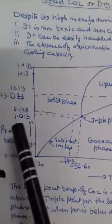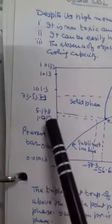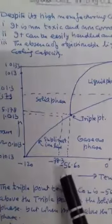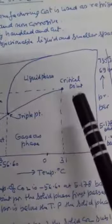Triple point pressure is 5.178 bar and temperature correspondingly minus 56.60 degrees Celsius. Critical point is here - pressure is 101.3 bar and temperature is 31 degrees Celsius. This is the critical point.